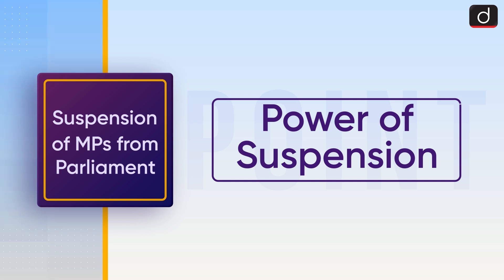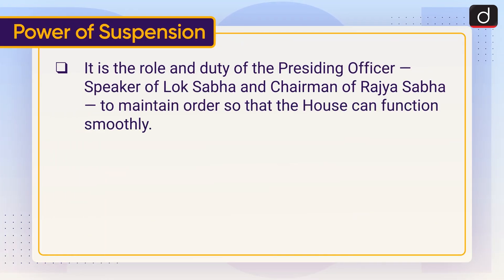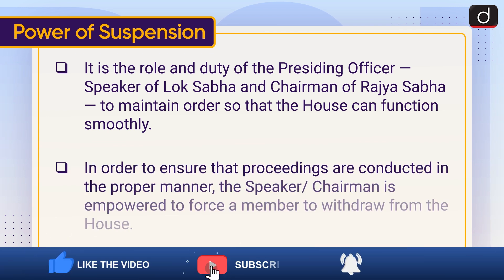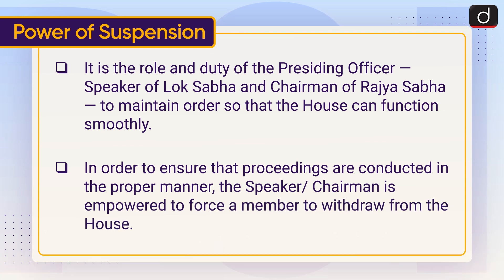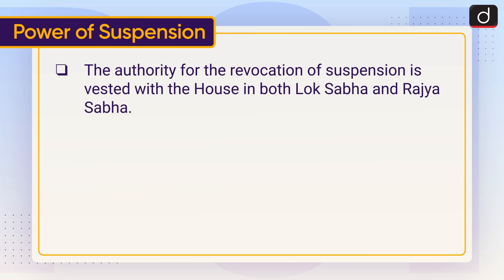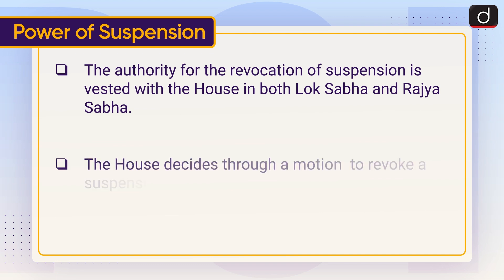Moving on to the power of suspension: it is the role and duty of the presiding officer — the Speaker of Lok Sabha and Chairman of Rajya Sabha — to maintain order so that the house can function smoothly. To ensure proceedings are conducted properly, the Speaker or Chairman is empowered to force a member to withdraw from the house. The authority for revocation of suspension is vested with the house in both Lok Sabha and Rajya Sabha, which decides through a motion to revoke a suspension.